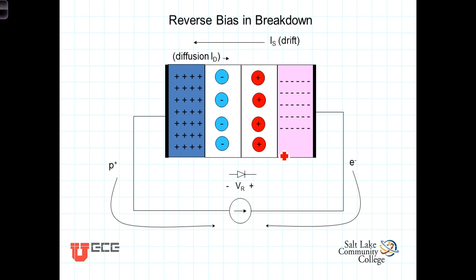As the reverse bias voltage is increased, the depletion region continues to widen. At some point, the reverse voltage is strong enough to start breaking covalent bonds, freeing up large amounts of electrons and holes. These unbound charges are swept by the reverse junction voltage and create a current in the reverse direction, at which point the reverse current flows freely. In some instances this damages the diode. In other diodes, known as Zener diodes, this reverse bias breakdown is intended and can serve to regulate the voltage in the surrounding circuit.